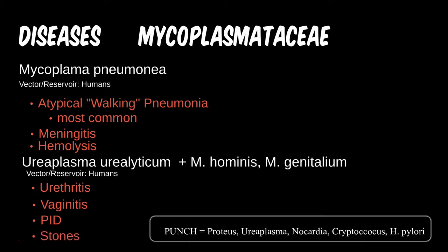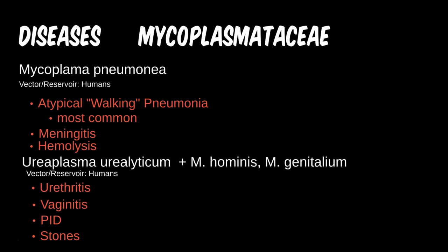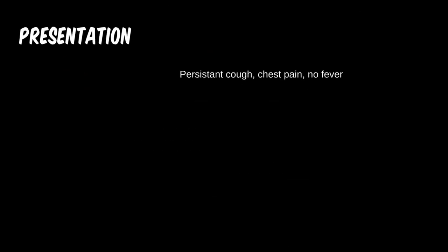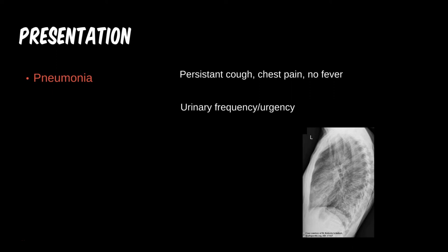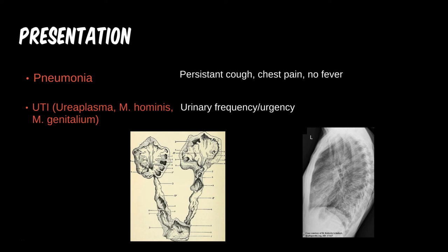Like Proteus, ureaplasma is a PUNCH mnemonic bug leading to stone formation in some patients. Clinically, consider mycoplasma for a patient with a cough that began three weeks ago and has lingered, presenting with chest pain but a negative cardiac workup — this is most likely the respiratory infection from mycoplasma, one of the most common community-acquired pneumonias after Strep pneumoniae. For a patient presenting with urinary urgency and frequency without fever, the three bacteria in this family most likely to cause a UTI are ureaplasma urealyticum, M. hominis, and M. genitalium.